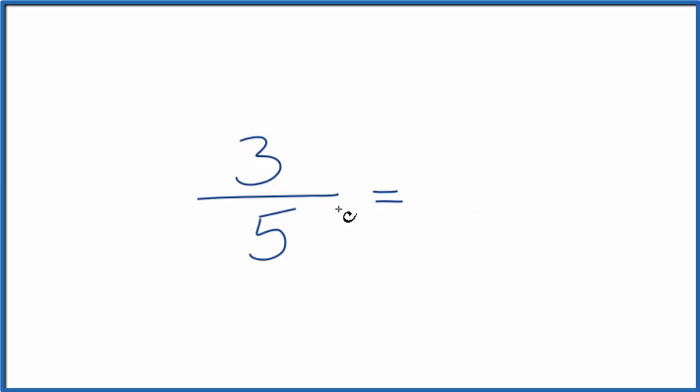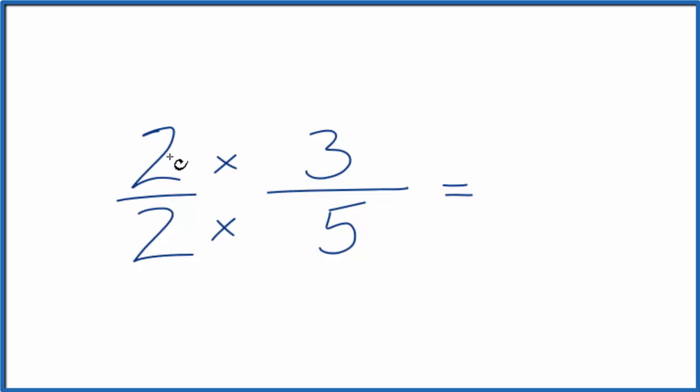So we could multiply 3 fifths by 1, that wouldn't change anything. But instead of 1, let's use 2 over 2. Because 2 divided by 2 is 1, we're multiplying by 1, doesn't change the value.